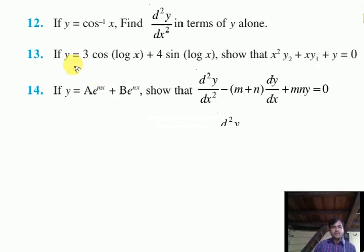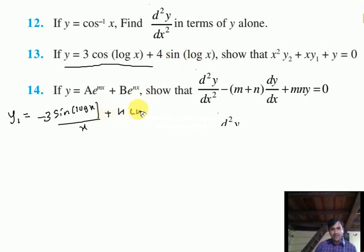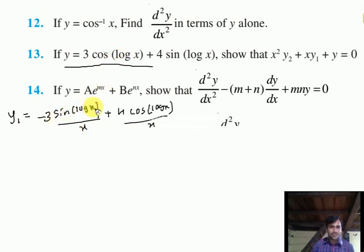In the same manner we solve y = 3cos(log x) + 4sin(log x). Briefly: y₁ = -3sin(log x)/x + 4cos(log x)/x. Those who cannot follow the derivative step can simply skip it and write the answer. Since we have denominator terms, shift them to the left-hand side.